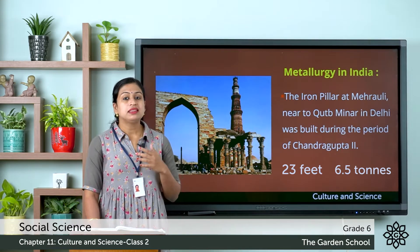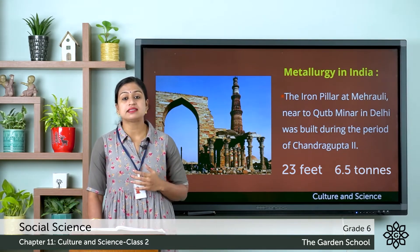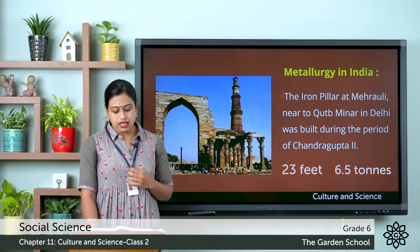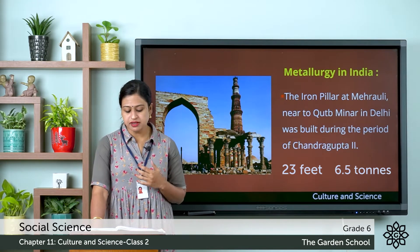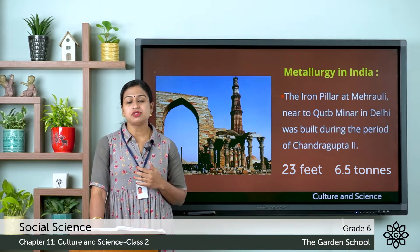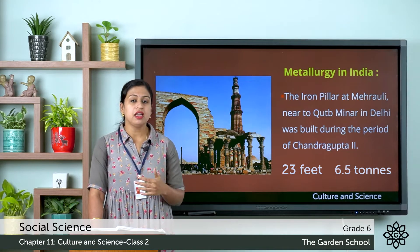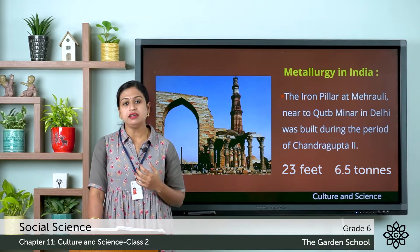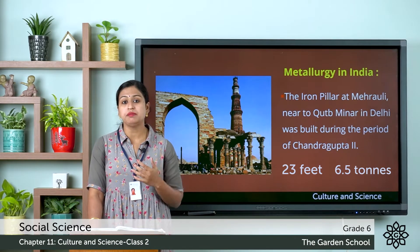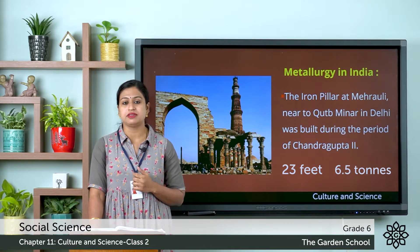The inscriptions on this pillar show the name of the king as King Chandra, and this pillar has not rusted to this day. The practice of metallurgy — that is, the branch of study of metals, their production and their purification — is known as metallurgy. Archaeological findings show that the Harappan people were expert in copper and bronze metallurgy.